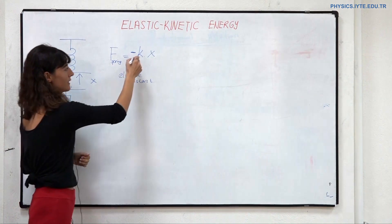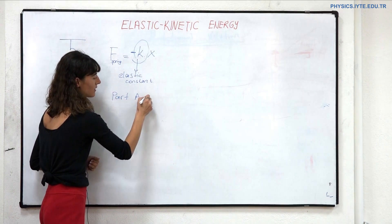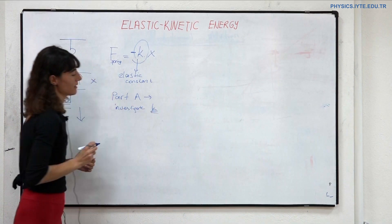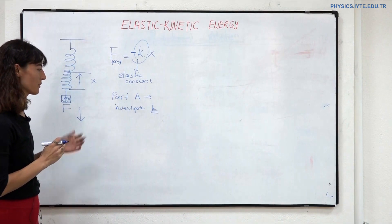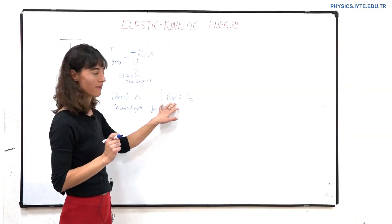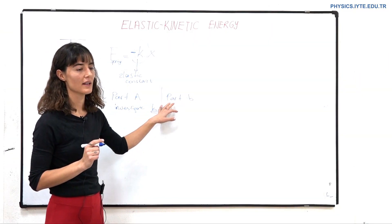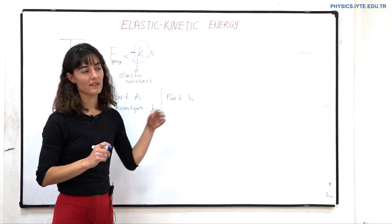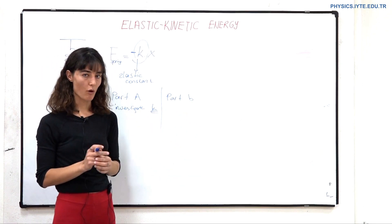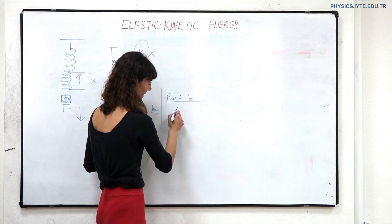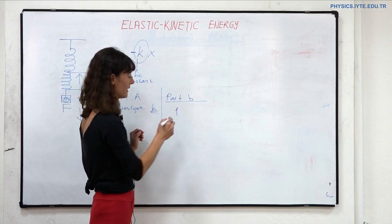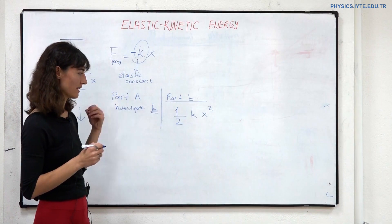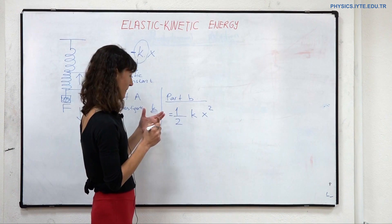In the experiment we will first investigate the spring constant. In part A, we will find the spring's constant from the spring we are using. In part B, we will investigate the relationship between elastic potential energy that the spring has and the kinetic energy it can give an object. The work done by the spring can be written as one-half k x squared, where x is the distance the spring was stretched or compressed.